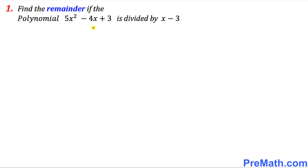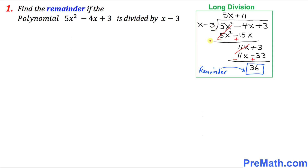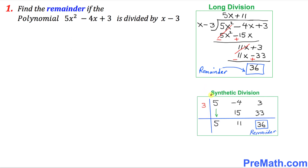It states: find the remainder if this given polynomial is divided by x minus 3. We have a couple of options. The first option is called long division — I'm sure you are pretty much familiar with this kind of long division — and our remainder turns out to be 36. Another method is called synthetic division, and this time our remainder turns out to be 36 as well.